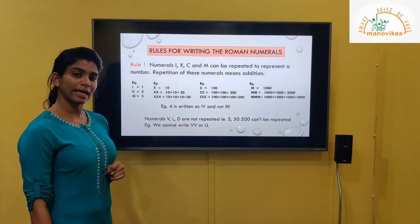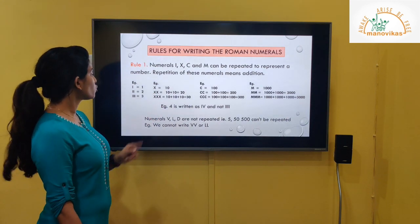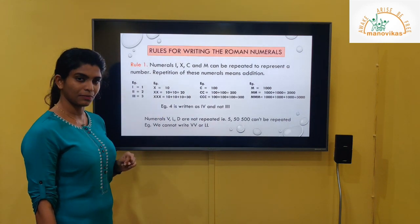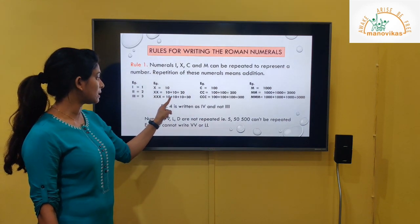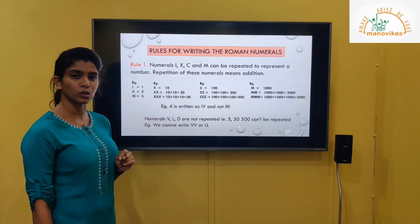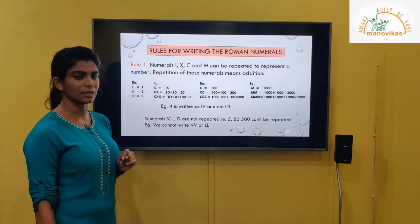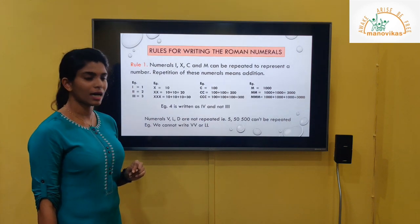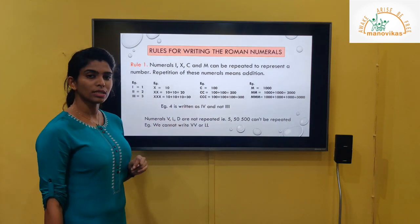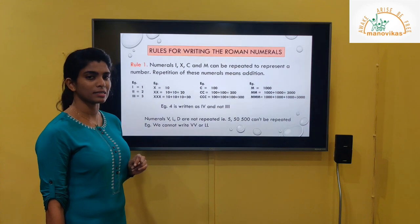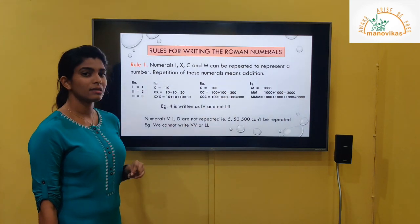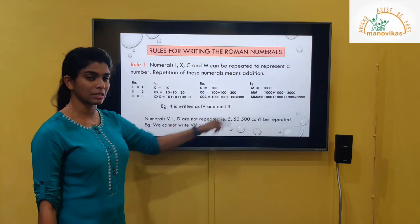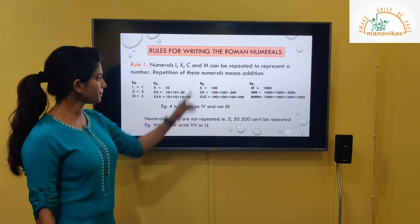Let's see the example of X. The value of X is 10, so two X's will be 10 plus 10, we get 20. Three X's will be 10 plus 10 plus 10, equal to 30. Next is C. The value of C is 100, so two C's will give us 200.